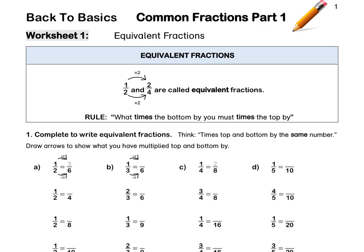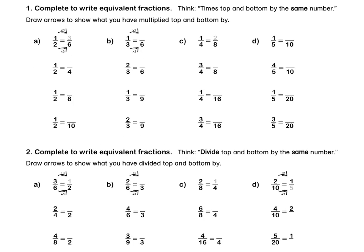Question 1: Complete to write equivalent fractions. Remember, times the top and bottom by the same number. If you struggle, draw arrows to show what you have multiplied top and bottom by. Let's look at some examples. For this question, we times 2 by 3 to get 6. Therefore, 1 times 3 is 3, so a half is equal to 3 sixths.